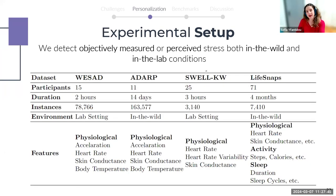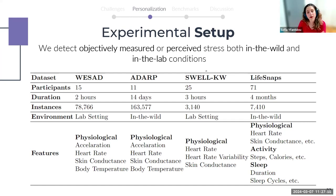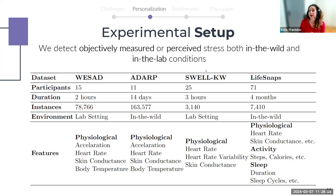To test the efficacy of these diverse personalization conceptualizations, we need to challenge them under different contexts, LiveSnaps being one of them. We carefully selected four benchmark datasets — LiveSnaps included — balanced to cover diverse contexts, including both in-the-wild and in-lab data, and data with objectively measured stress labels or perceived stress by self-reports.